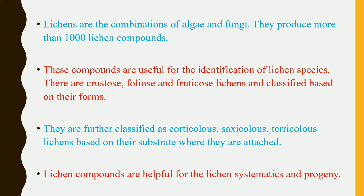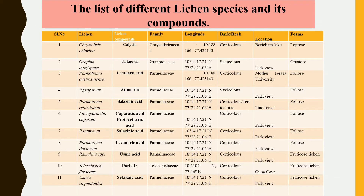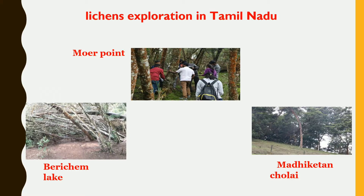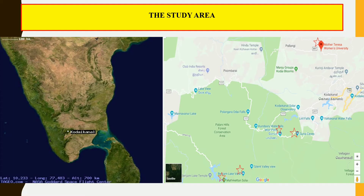Lichens are combinations of algae and fungi. The compounds produced by lichens are very helpful for species identification. These are all the different species we have identified from the study area — Meyer Point, Bericham Lake, Madi Ghatan Sholi from Kodakonel, Hills of Dindical District, Bericham Lake, and Silent Valley.